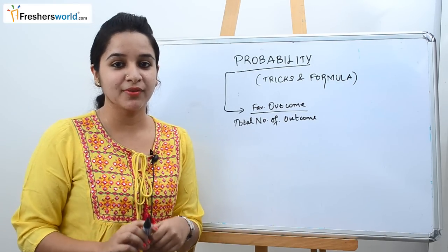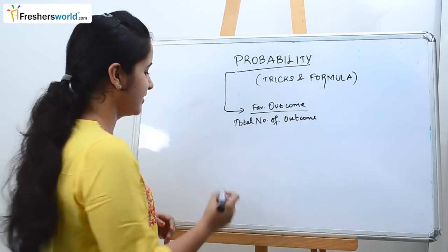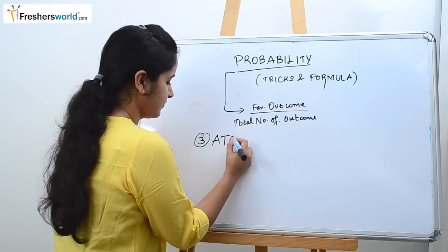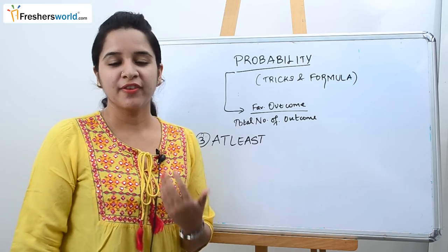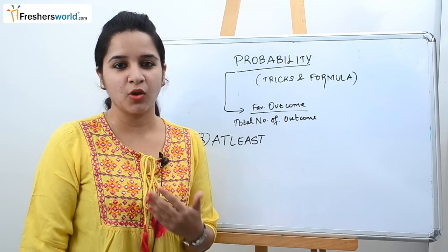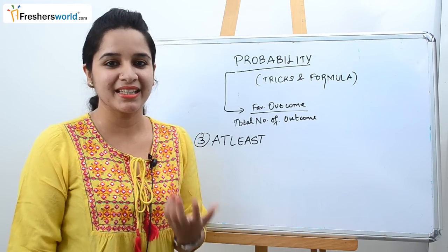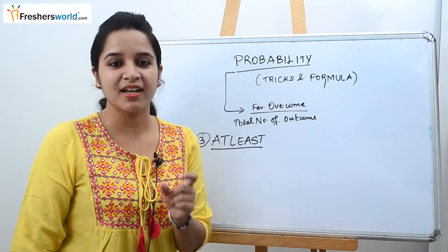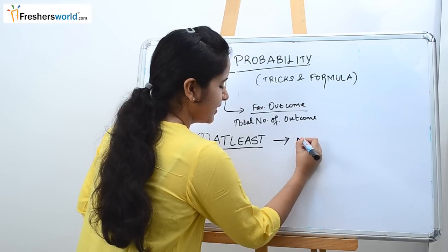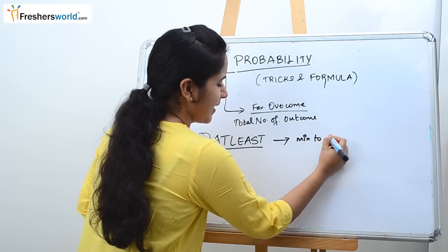So the third trick that one must know in probability is 'at least'. You would have faced a lot of questions in competitive exams asking 'at least'. The word itself shows it starts from minimum. So always remember at least means minimum to maximum.